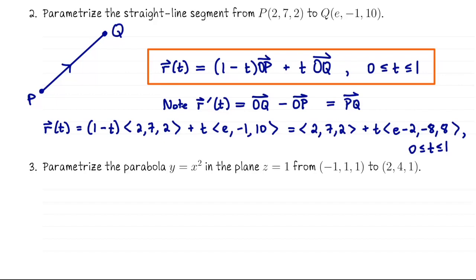For the third example, we want to parametrize the parabola y equals x squared that lives in the plane z equals 1 from this starting point to this ending point. This is a common parametrization problem. You have, say, one variable written in terms of another,